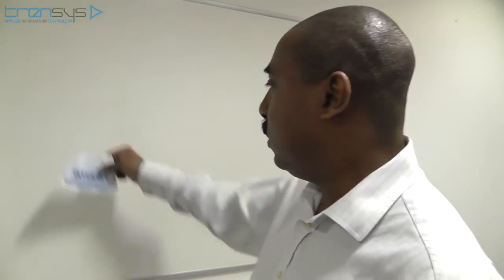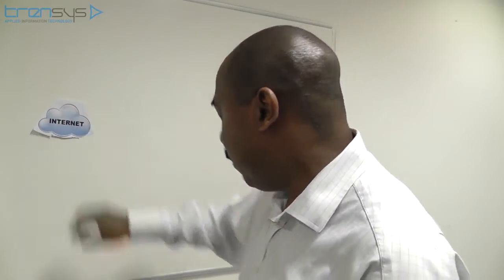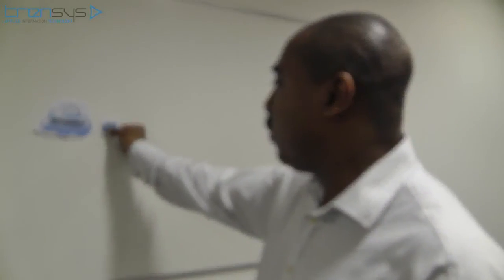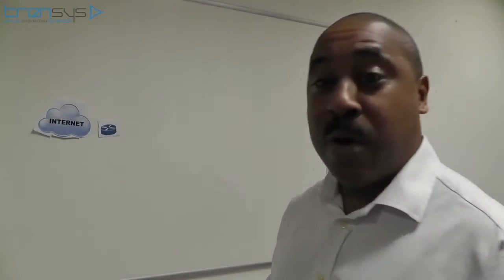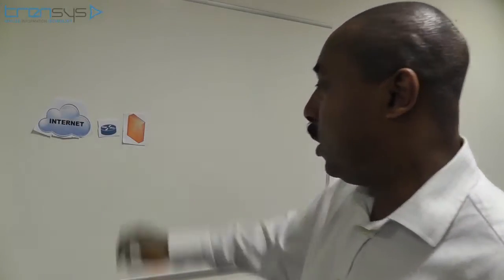Let's imagine we've started up a new company. Most services now depend on the internet, so the first thing we need is an internet connection. We also need a router from our service provider, and we then need to buy a firewall. That's our typical office deployment.